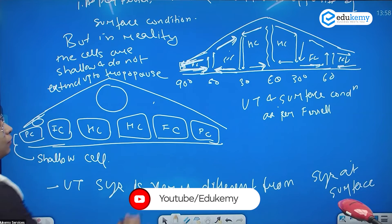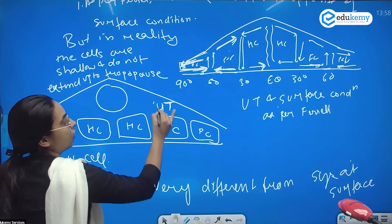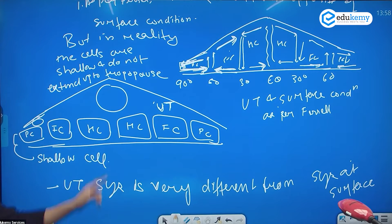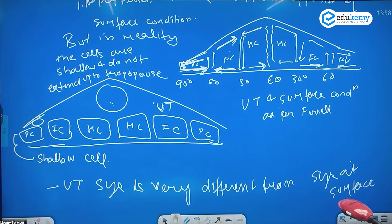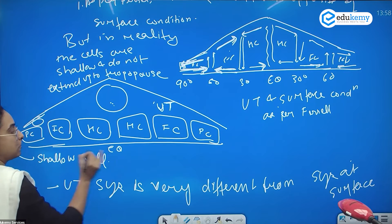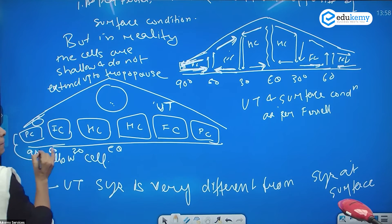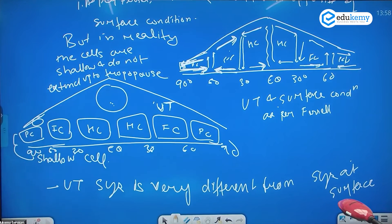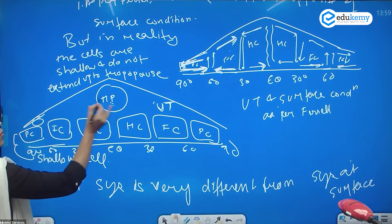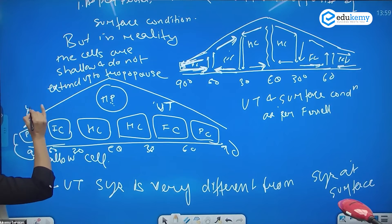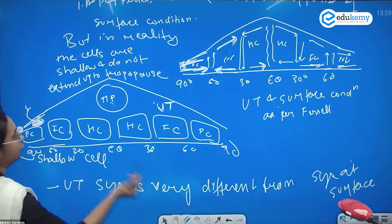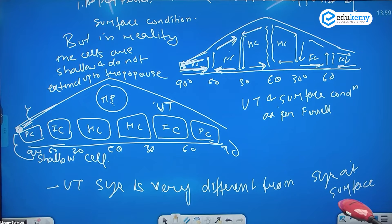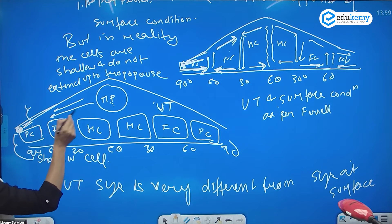So what is happening at the upper troposphere? At the upper troposphere, above the equator you have high pressure, and above the poles you have low pressure. The wind moves from high pressure to low pressure — this is the pressure gradient force driving winds from the equator towards the poles.